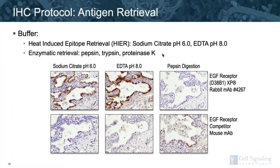Antigen retrieval is a step in the IHC protocol that can differ greatly from lab to lab and can account for notable differences in staining results. Look to the vendor website or data sheet for recommendations on retrieval type and buffer. Heat-induced epitope retrieval is more commonly used than enzymatic retrieval, though there are some antibodies that prefer enzyme treatment. We use HIER with sodium citrate most often and EDTA in more limited cases. EDTA can increase positive signals but may also increase background, and thus primary antibody dilutions may need to be tweaked for optimal signal-to-noise. For example, the EGFR antibody 4267 shows staining with citrate and stronger staining with EDTA, and does not stain following enzymatic retrieval. A comparison mouse monoclonal antibody does not work following HIER with citrate or EDTA, but does show staining with enzymatic retrieval using pepsin. The optimal antigen retrieval type is antibody specific, not target specific.